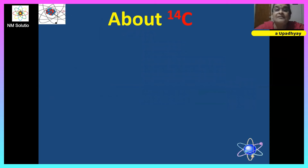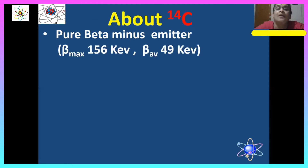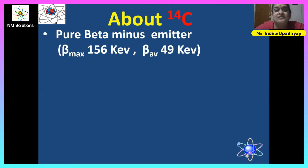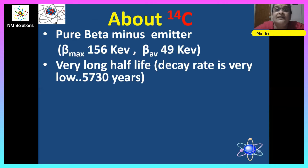About 14-carbon as a radionuclide: it is a pure beta emitter — beta minus. The maximum beta energy it can give is 156 keV, and the average is just 49 keV. It is a very long half-lived radionuclide, meaning the decay rate is very slow, with a half-life of 5730 years — equivalent to many human lifespans.